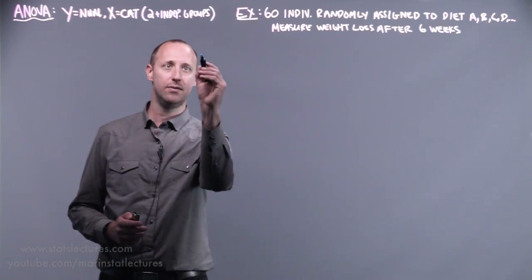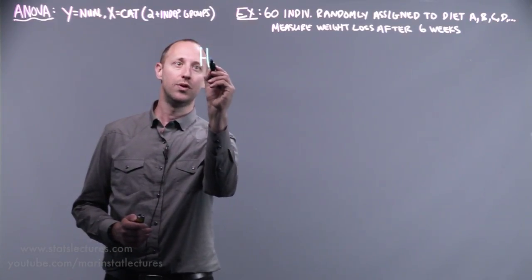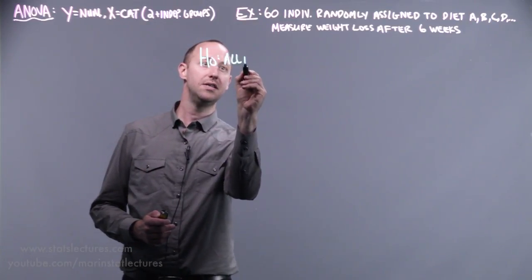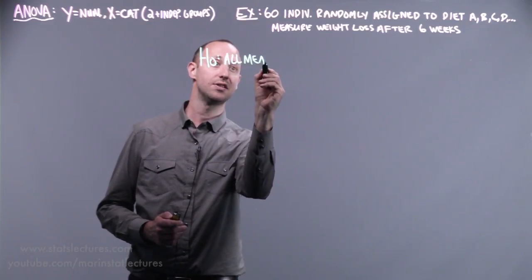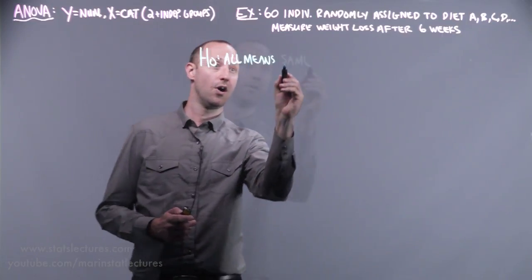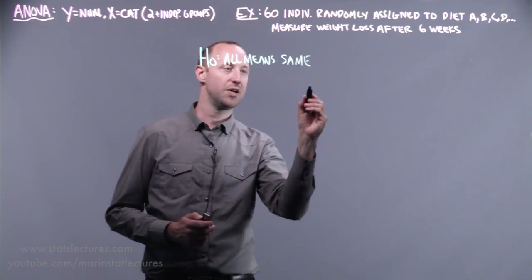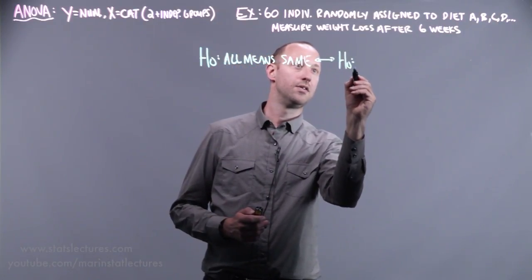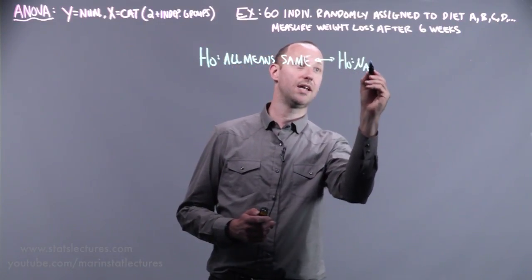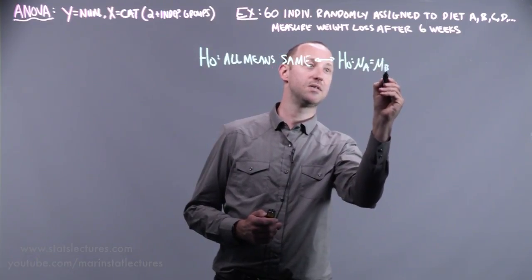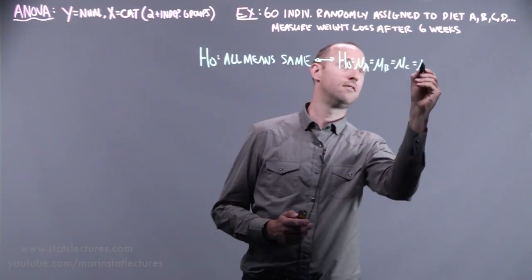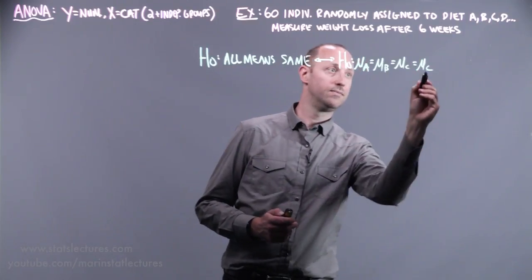To try and get at this question, we're going to start with a null hypothesis that all of the means, the mean weight loss in all these four groups, are the same. Or expressing it in notation, the mean weight loss for someone on diet A is the same as the mean weight loss for diet B, the same for C, and the same for D.